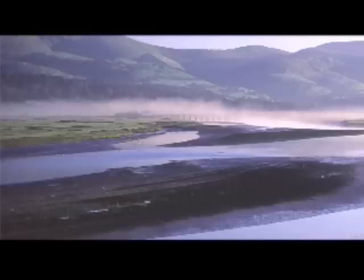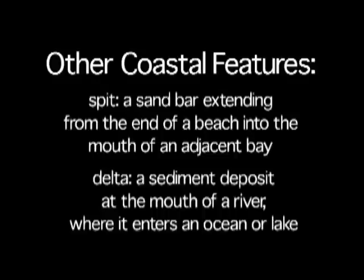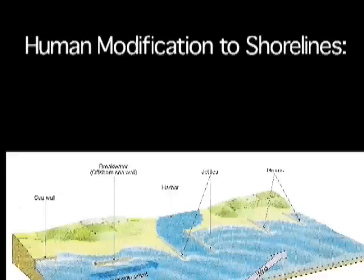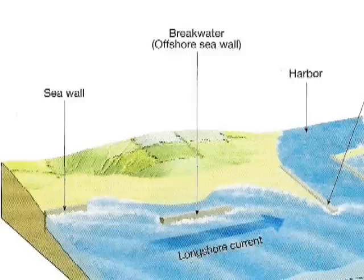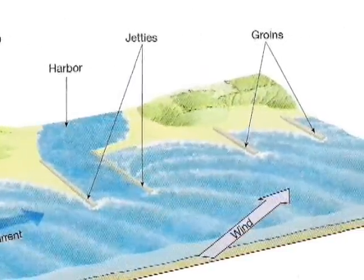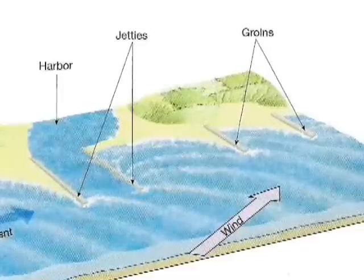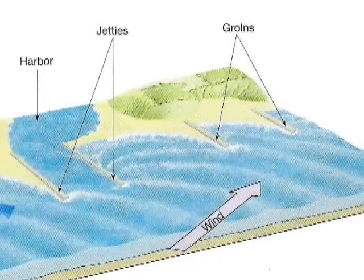You can get other features on coastlines: spits, which are sand bars extending from the beach into a bay; deltas, which are pieces of land sticking out from a river. We also have human modifications to shorelines — things like sea walls, breakwaters, or groins — to try to prevent sea erosion. Looking at pictures you can see clearly that these will involve a build-up of sand in different spots and also erosion in different spots relative to what nature would have them do, sometimes for good and sometimes not.